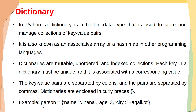For example, there is a dictionary where the dictionary name is `person`. Here, `name` is a key and `dhyana` is a value, `age` is a key and `3` is a value, `city` is a key and `bagulcoat` is a value. So `name`, `age`, and `city` are keys, whereas `dhyana`, `3`, and `bagulcoat` are values.